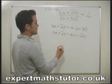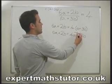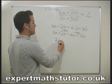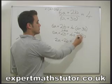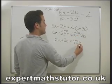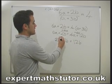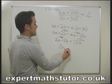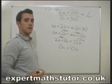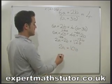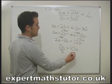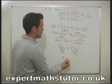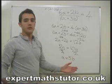Let's finish it off. Get rid of a from the right side by taking away 4a from both sides: 6a minus 4a gives 2a, plus 2b equals 12b. Now get rid of b from the left side by taking away 2b from both sides: 2a equals 10b. Dividing both sides by 2, the 2s cancel, giving us a equals 5b.